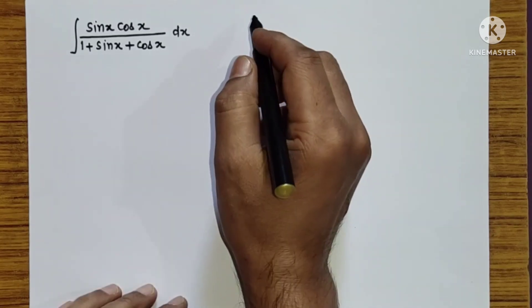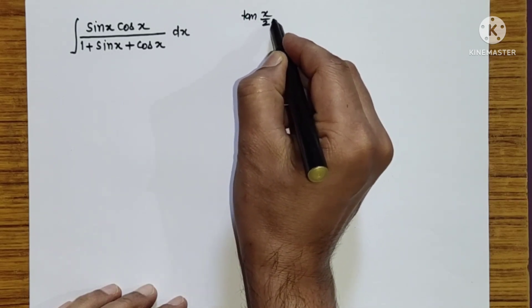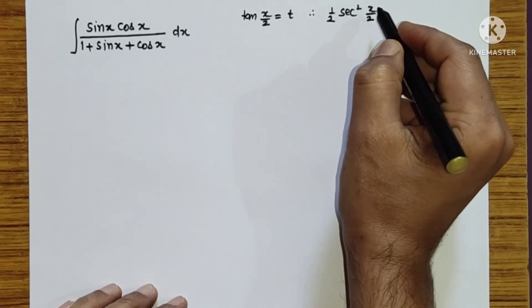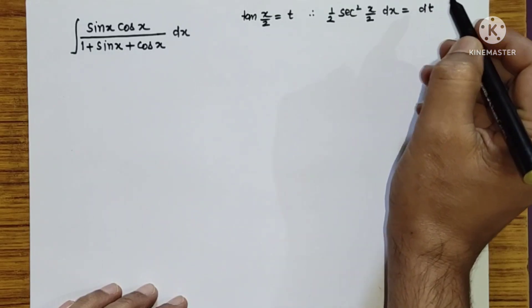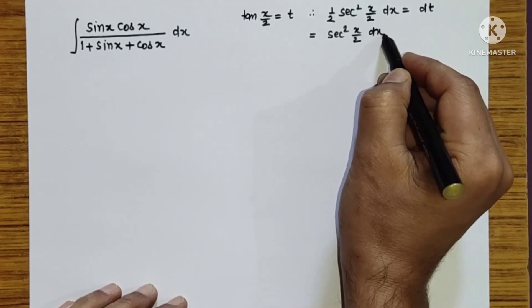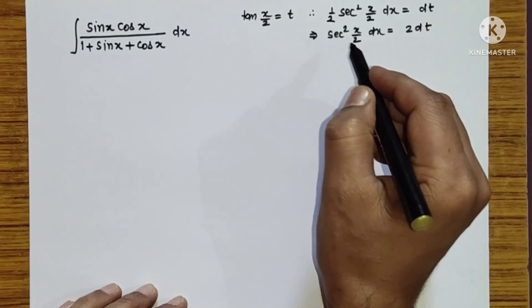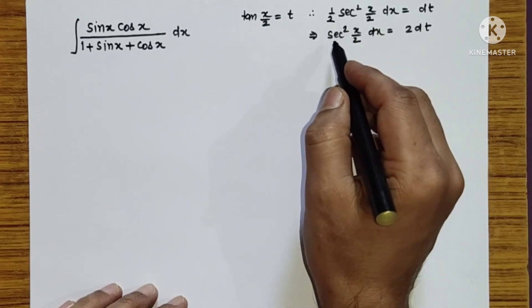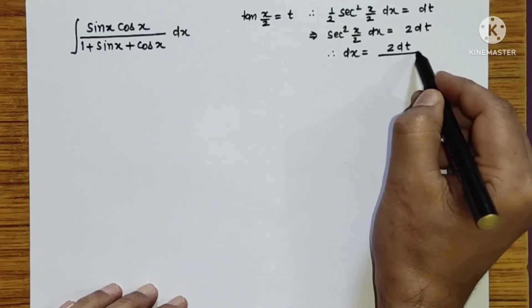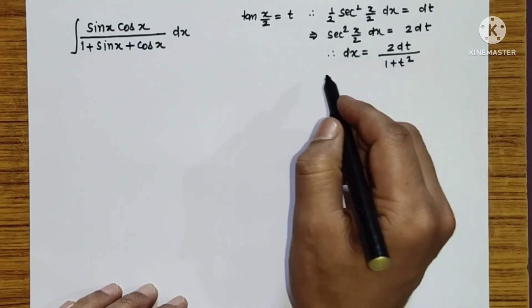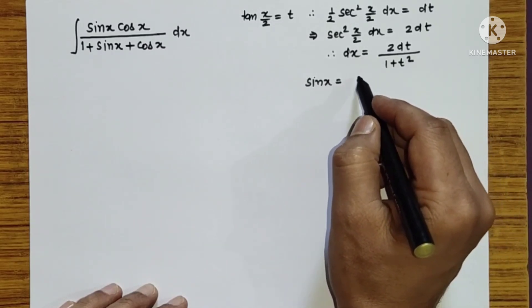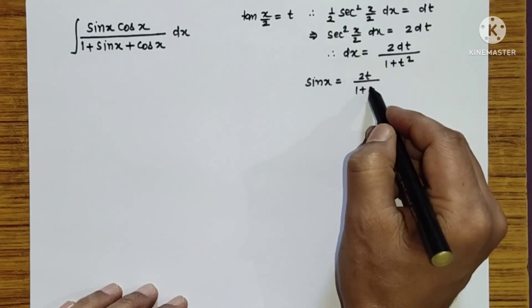In universal substitution we put tan(x/2) equal to t. Then half sec²(x/2) dx equals dt, so sec²(x/2) dx equals 2dt. Since sec²(x/2) equals 1 plus tan²(x/2) and tan(x/2) is t, we get dx equals 2dt divided by (1 plus t²). We can express sin x as 2tan(x/2) over 1 plus tan²(x/2), giving 2t over (1 plus t²).